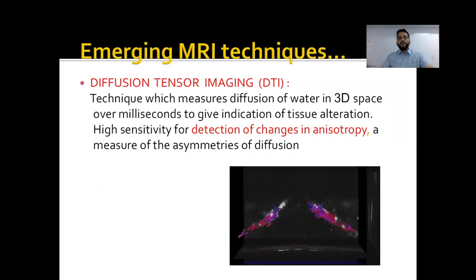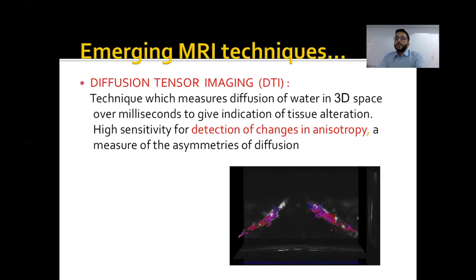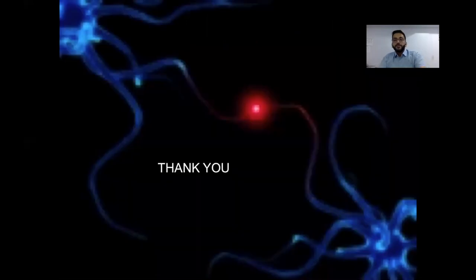Before ending, some emerging MRI techniques for brachial plexus imaging are worth mentioning. DTI, or diffusion tensor imaging, measures diffusion of water in 3D space over milliseconds to give an indication of tissue alteration, with high sensitivity for detecting changes in tissue anisotropy. This is similar to the DTI used to assess integrity of longitudinal white matter pathways in the brain, and is still an evolving imaging technique. This brings us to the end of the presentation — I hope you found it informative. Thank you.